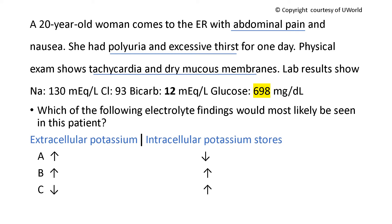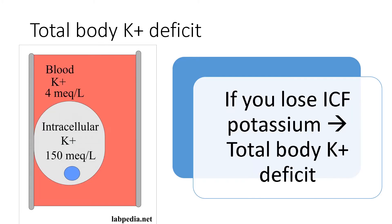To answer the question about what potassium findings you would most likely see, you really need to know that most of the body's potassium lies inside the cell — it's 150 versus 4 — meaning that if you really want to deplete total body potassium, you'd remove it from inside the cell. And that's exactly what DKA does.